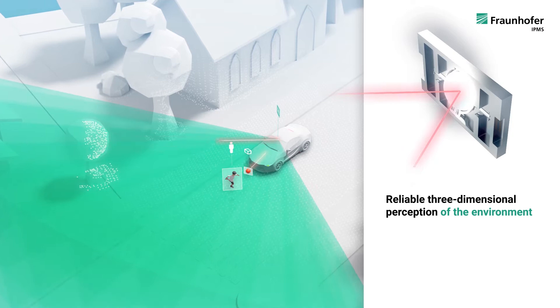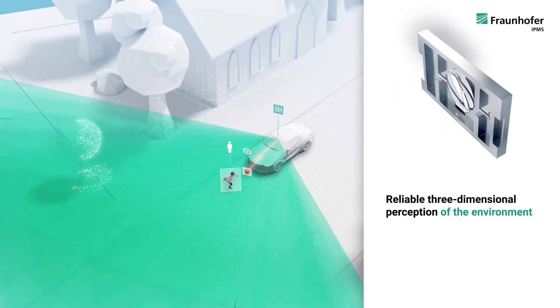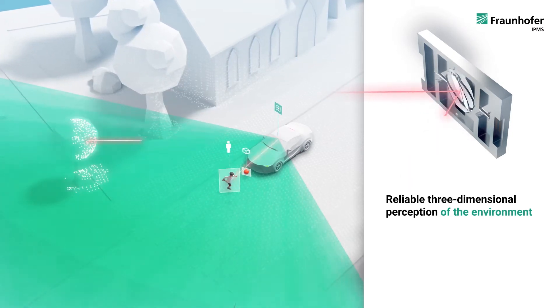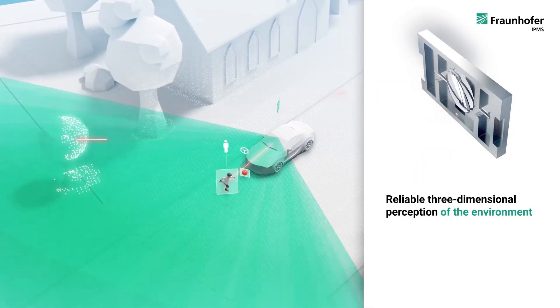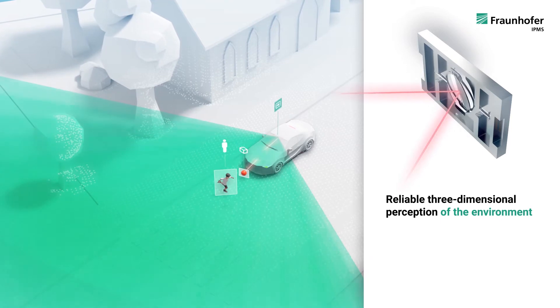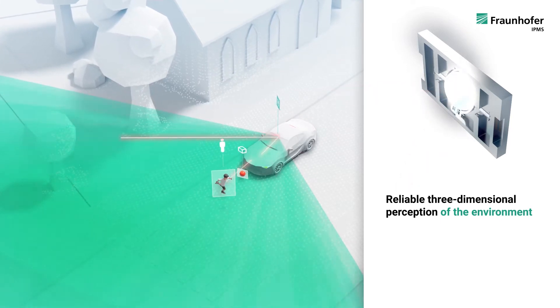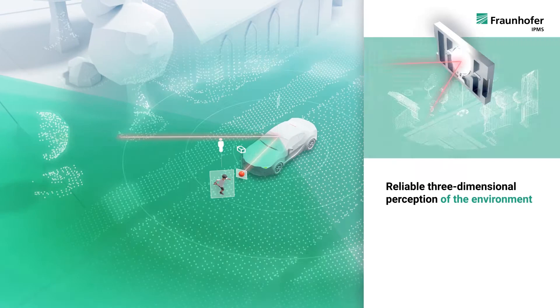Our MEMS mirror distributes the laser beams in two dimensions and bundles the light in the currently measured position. The third dimension is derived by the detection of the reflected light. The distance information for each scanned position results in a 3D point cloud.